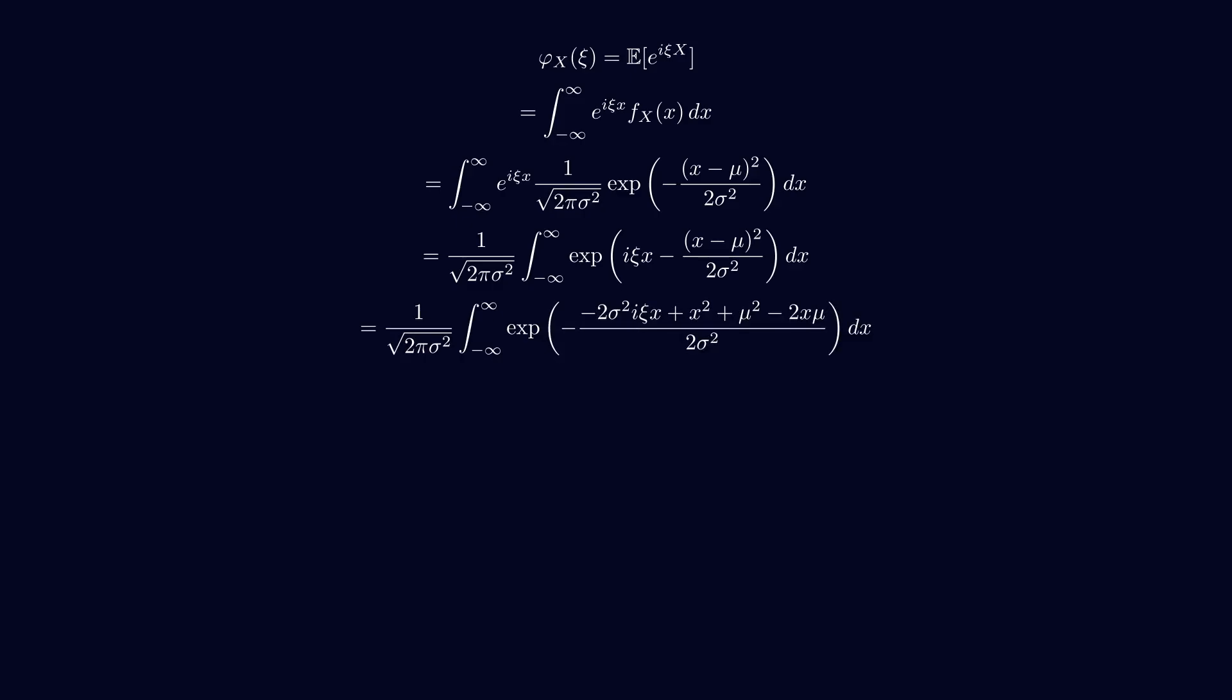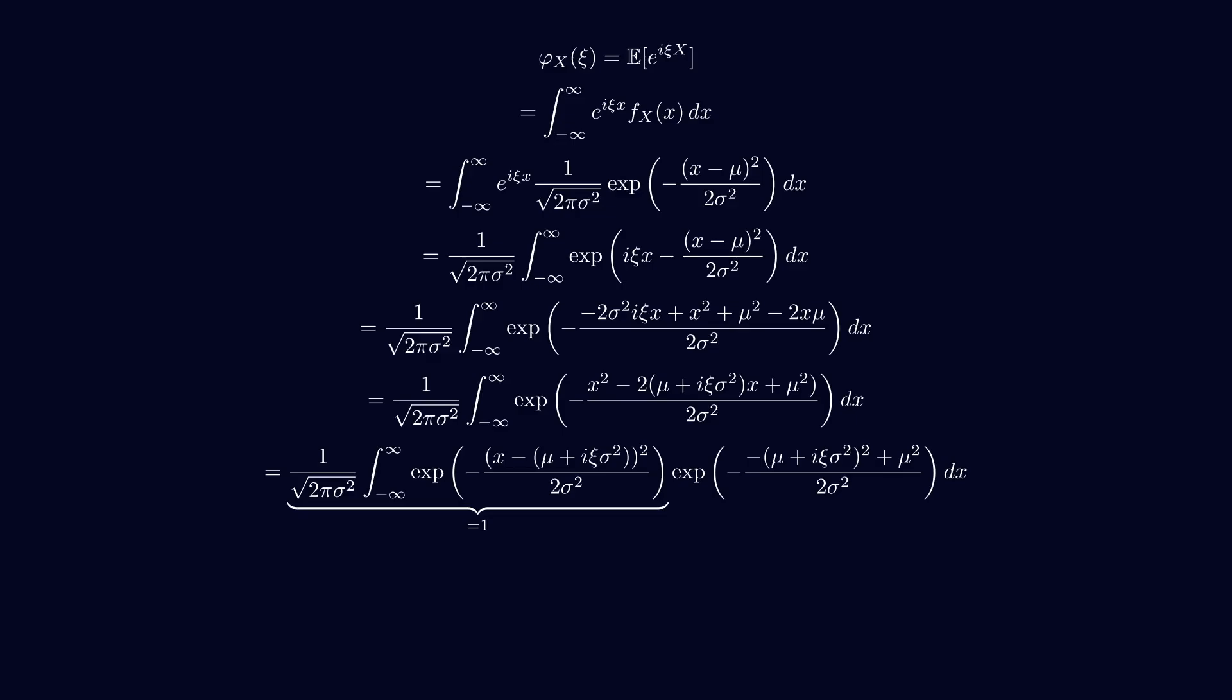In the next couple of lines, things get a bit complex, as we try to recreate a recognizable a minus b squared formula. Then, we obtain the integral of a Gaussian function that simplified to 1. Finally, we can expand and simplify the equation.